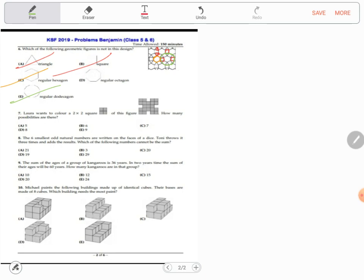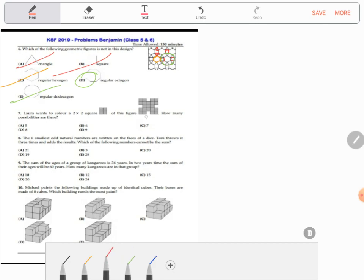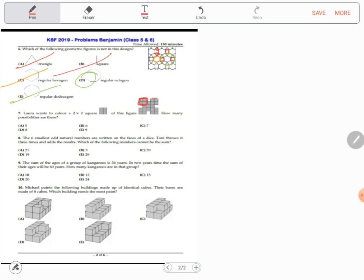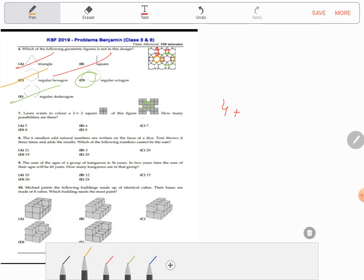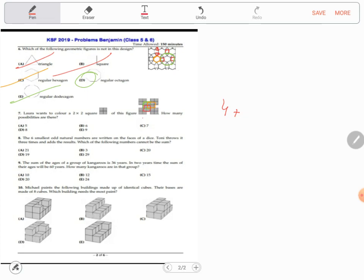Question number seven: Laura wants to color a 2 by 2 square of this figure. How many possibilities are there? Look at this carefully. First we will make the outer regions for 4 by 4. This is a possibility: 1, 2, 3, 4. Now we have four possibilities. And we will look now at the inside. We have this possibility, this one. 1, 2, 3, 4. Four plus four, we have eight possibilities in total. So the answer is D.